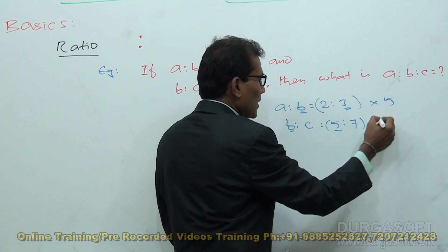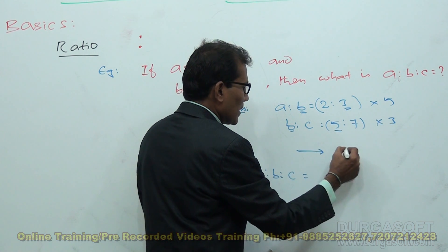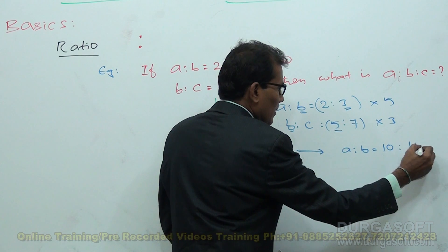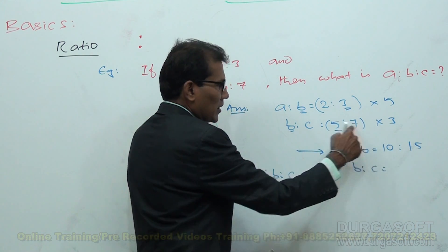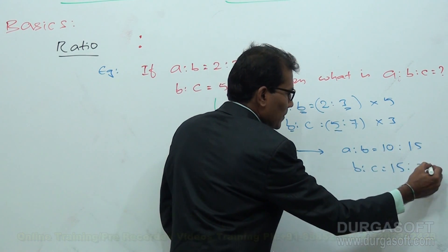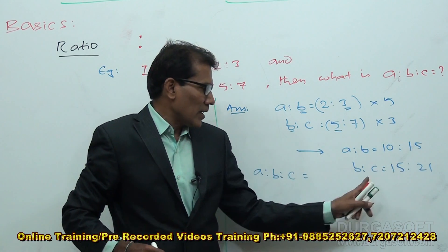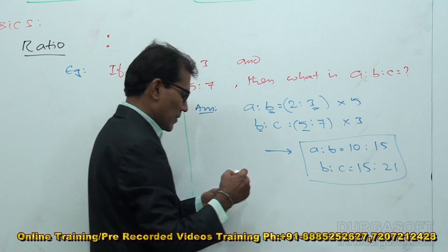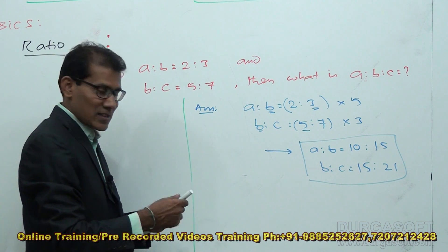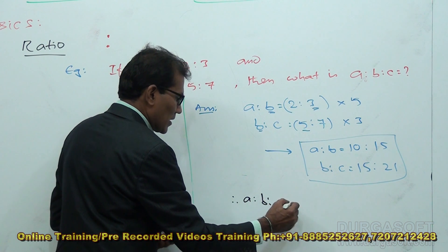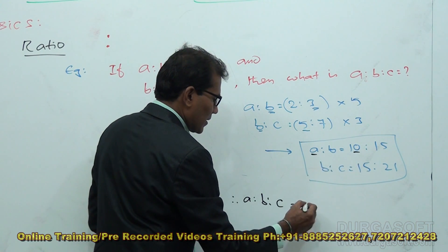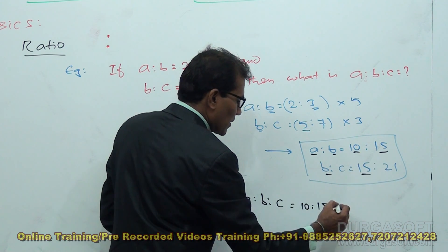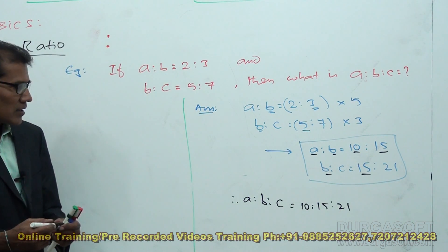I am multiplying the first ratio by 5 and the second by 3. From this: A is to B becomes 10 is to 15, and B is to C becomes 15 is to 21. Now B is 15 in both cases. Therefore, A is to B is to C becomes 10 is to 15 is to 21. So A is to B is to C is 10 is to 15 is to 21.